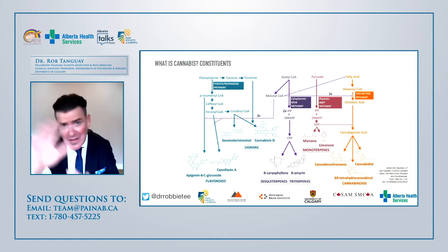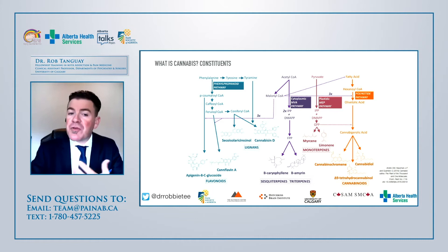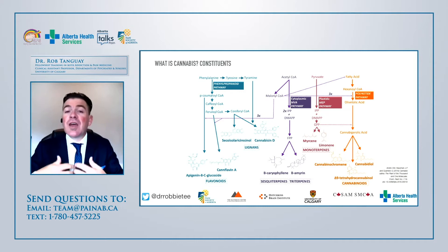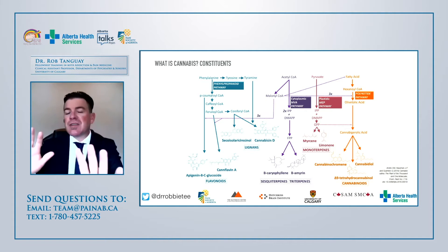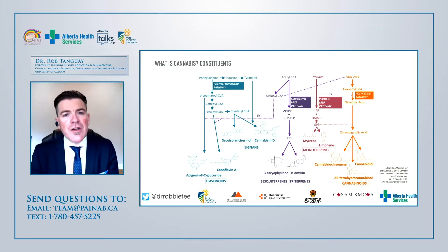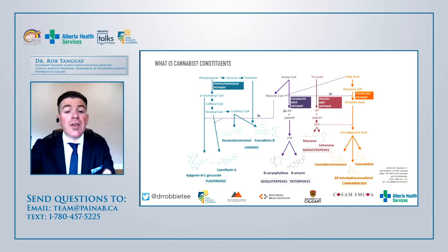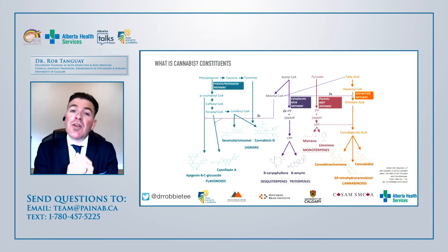Looking at cannabis constituents, there are flavonoids that provide flavors, lignans, and different terpenes. It's the terpenes that we get pretty excited about now. When I first started lecturing about cannabis, the focus was always on CBD versus THC — we didn't really know much about entourage effects or what the terpenes do. Myrcene is one of the most important terpenes when looking at sleep.